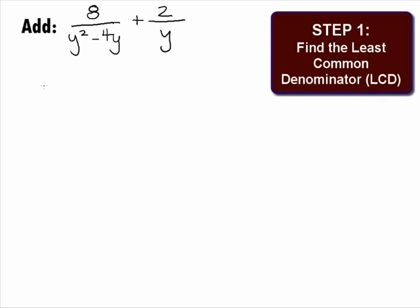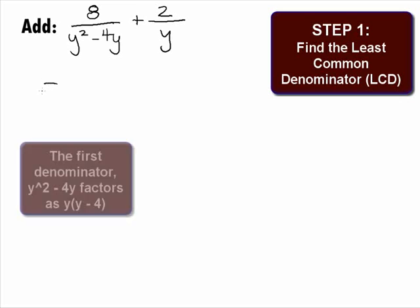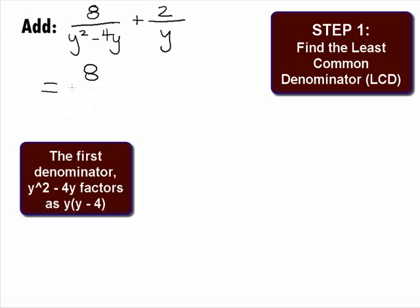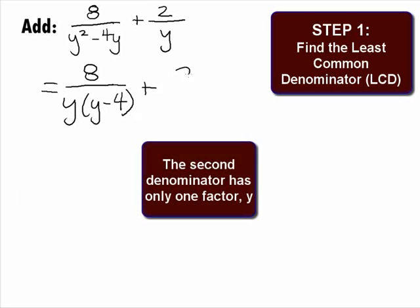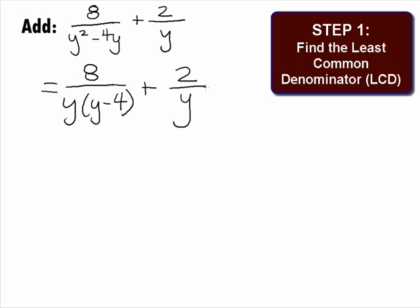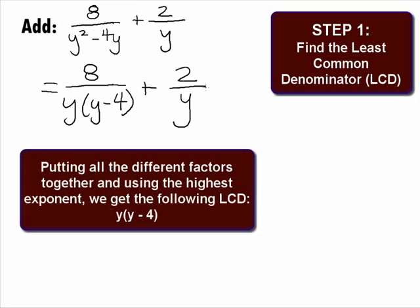In Step 1, we want to find the least common denominator. Let's see what we get when we factor the denominators. The first denominator is y squared minus 4y. It looks like we can factor out a greatest common factor of y, and when we do this, we get y times y minus 4 in that first denominator. The second denominator is y, which will not factor, so that second rational expression will remain 2 over y. The least common denominator is made up of all the different factors together raised to the highest power of each factor. We found two different factors of y and y minus 4, so our least common denominator will be y times y minus 4.